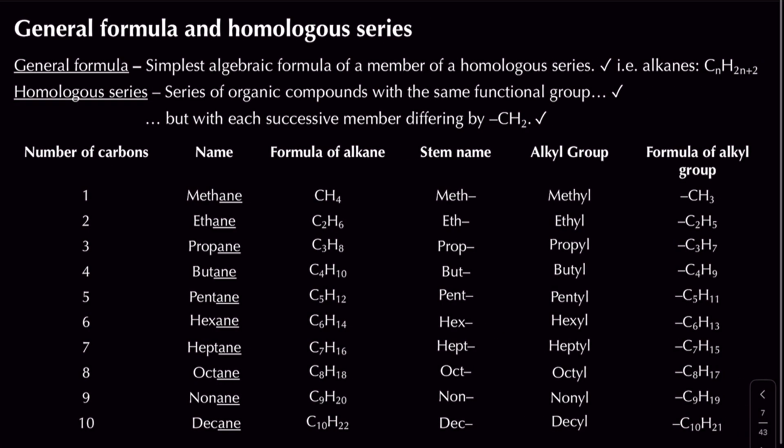Functional groups are parts of molecules responsible for their reactivity. We've categorised these into different kinds of organic compounds like alcohols, aldehydes, and ketones. There are two more key terms to be aware of: general formula, which you've probably come across at GCSE — defined as the simplest algebraic formula of a member of a homologous series. A good example is alkanes: CnH2n+2.